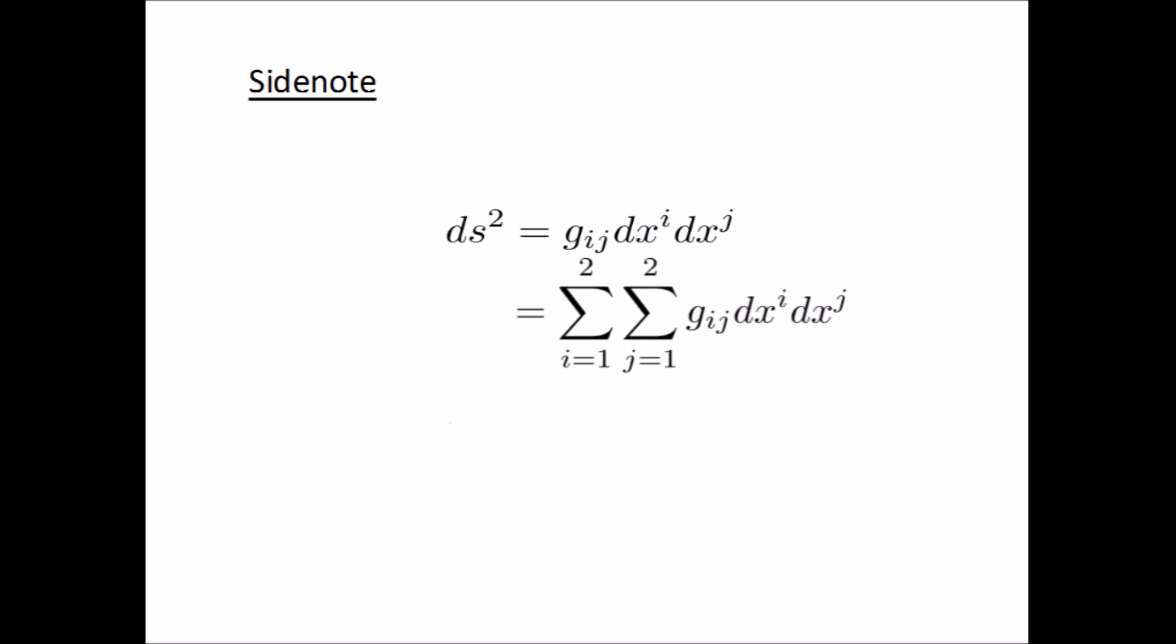Secondly, you may have noticed that sometimes I write the indices as subscripts and other times as superscripts. The reason for this has to do with the transformation properties of scalars, vectors and tensors and will be covered in another video. For now, all you need to remember is that a lowercase index must be summed together with an uppercase index.